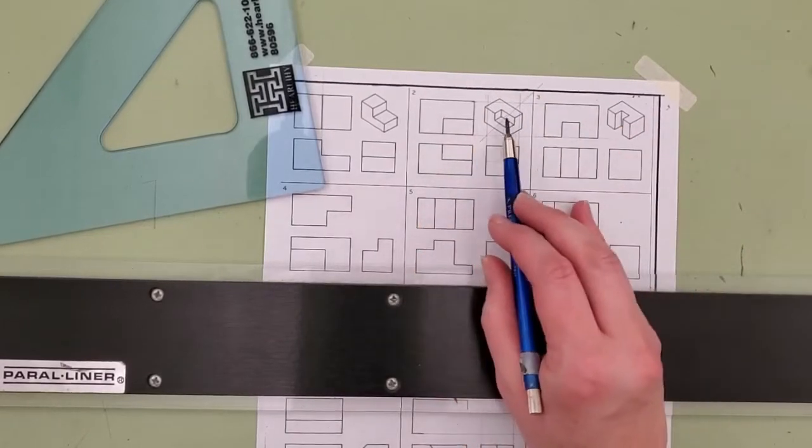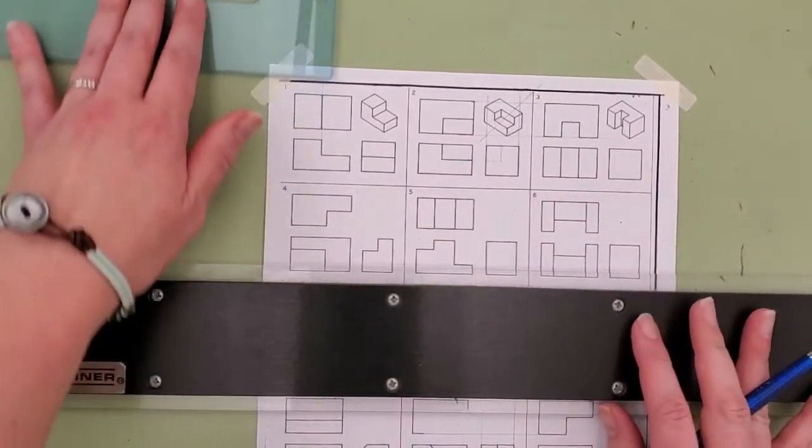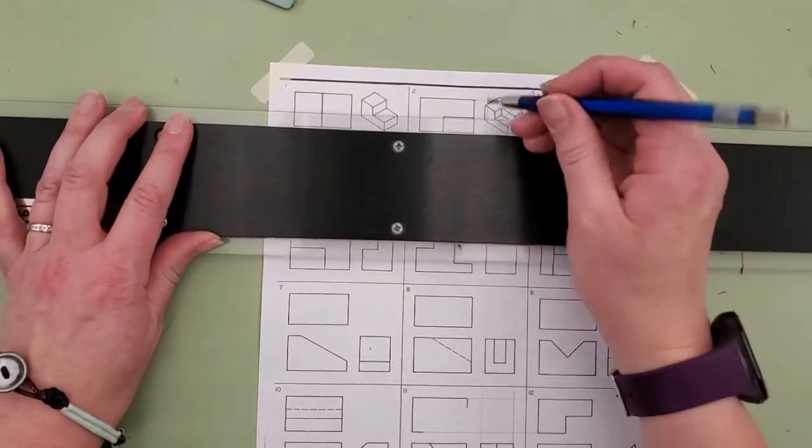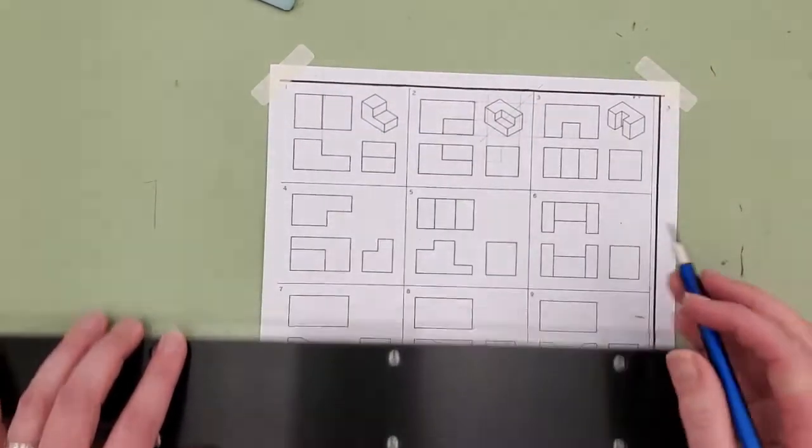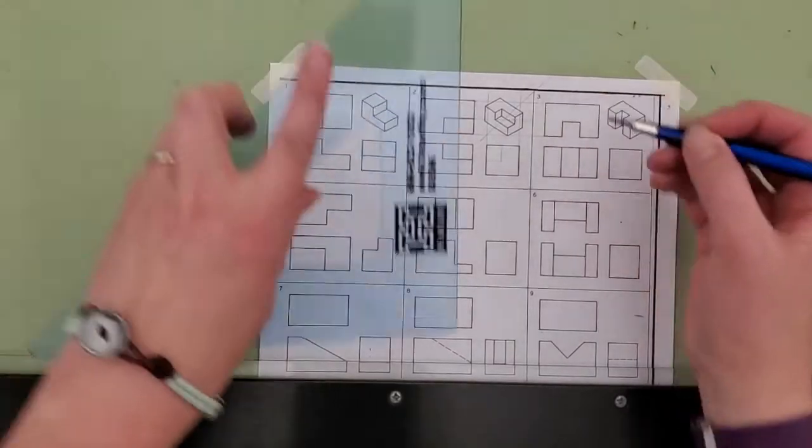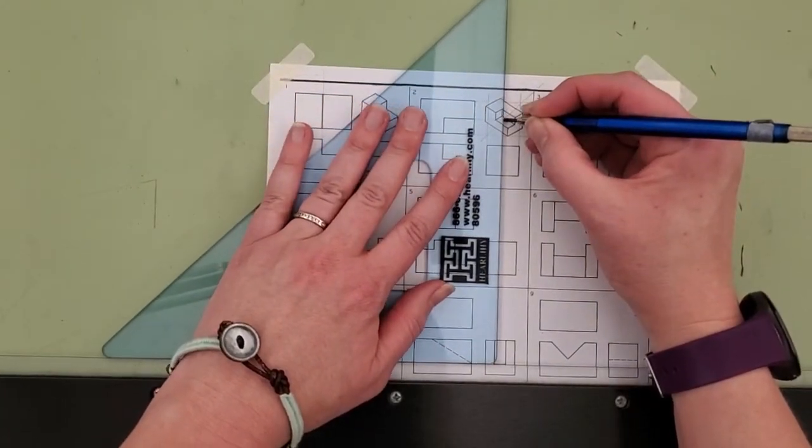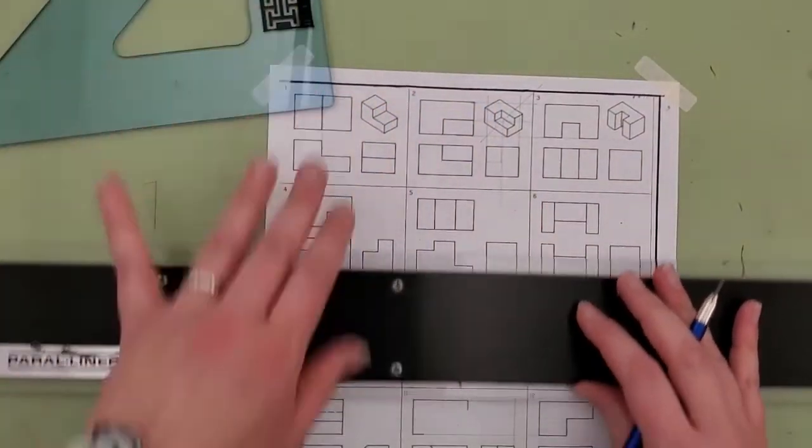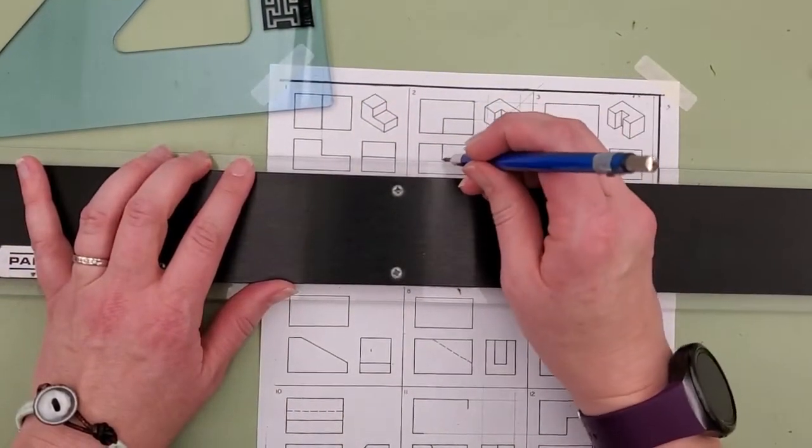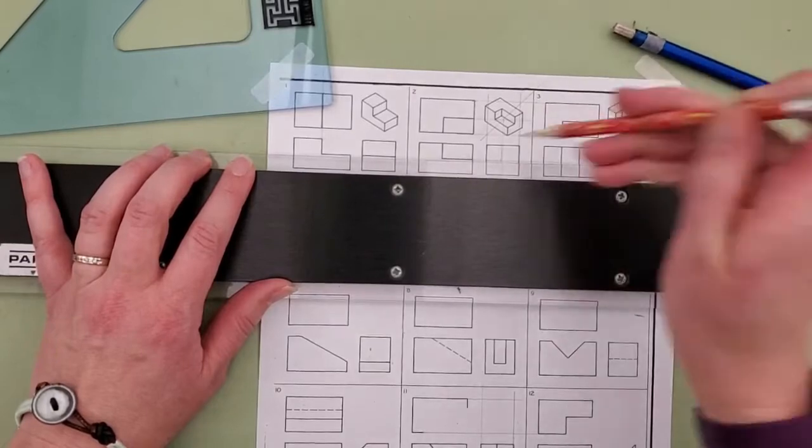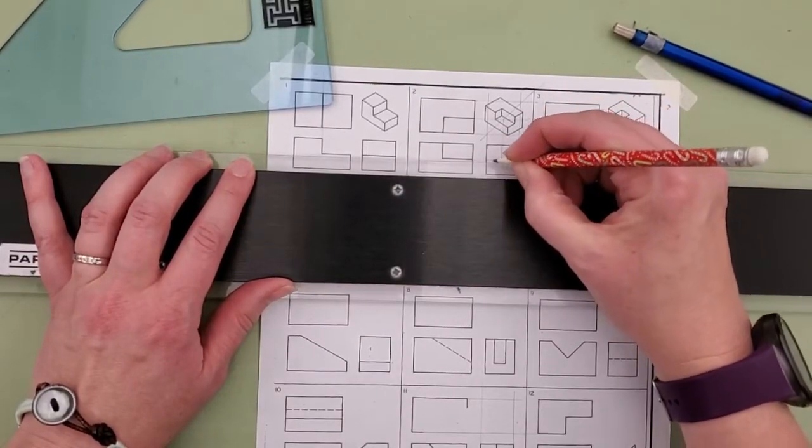At this point we use that 45 just like we would with a regular orthographic drawing. We transfer the information over and where it hits the 45 we drop it straight down, and any information from the front view, and then we darken in our object lines.